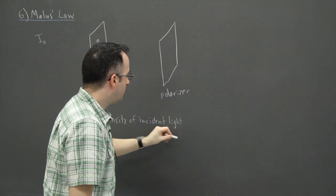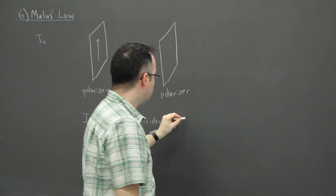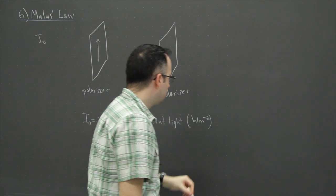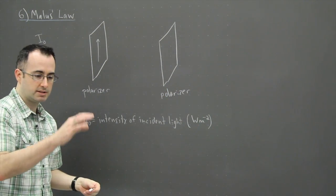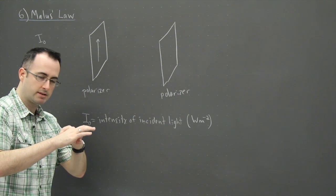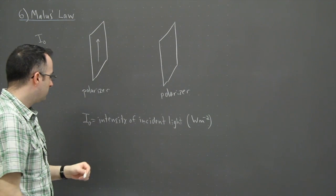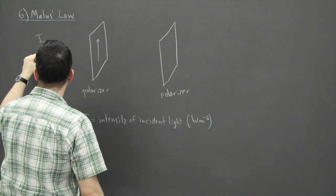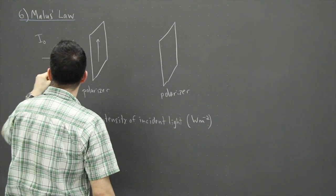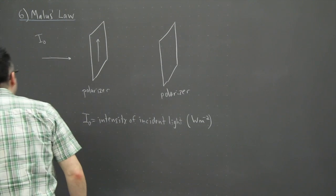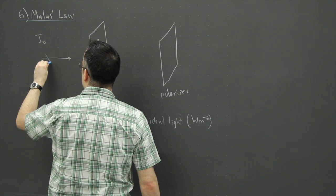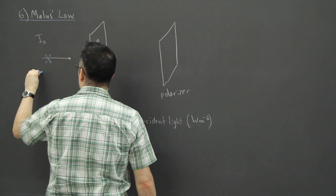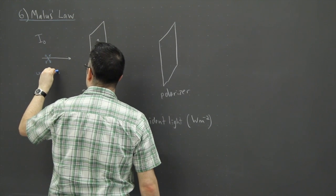I zero is going to be the intensity of the incident light. Now intensity is measured in power per unit area so it's watts per meter squared. You could measure this with a detector, how many watts it detects for its surface area. Now we've got incoming light here, but the light is going to be unpolarized. So maybe the angle of polarization is like this, maybe another one is like this. Unpolarized.